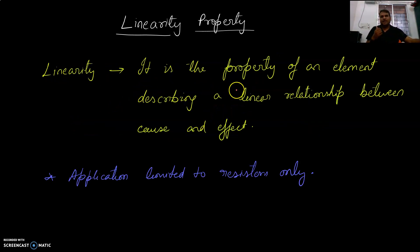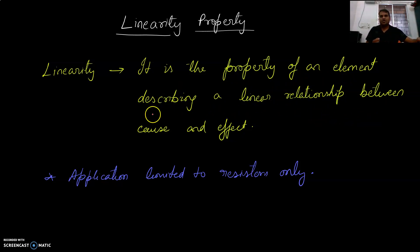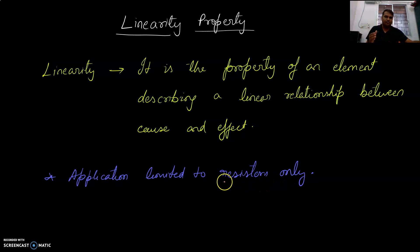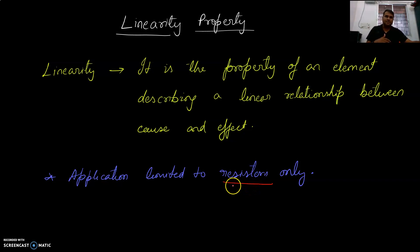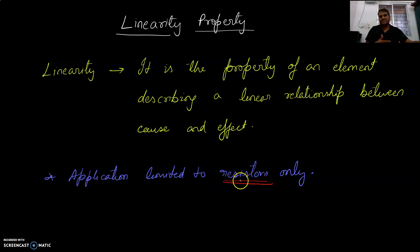Linearity is a property of an element describing a linear relationship between cause and effect, with application limited to resistors only. In this example, we will limit ourselves to the application of resistors only — a resistor where resistance is not changing with time or because of temperature. Since the resistor is a linear element, we will take examples with the help of resistors most of the time.